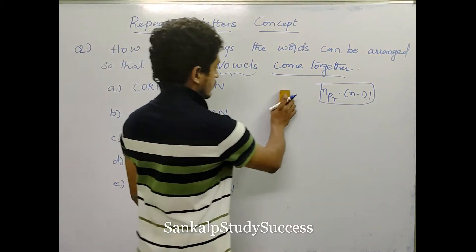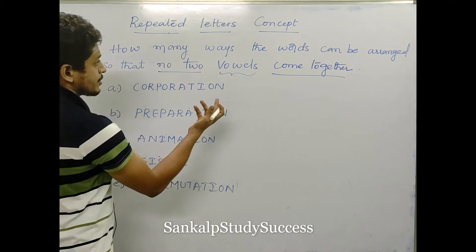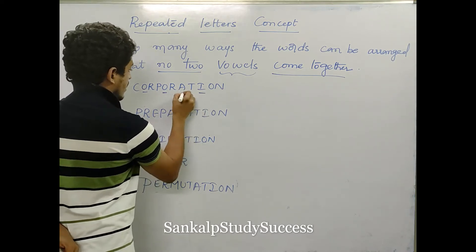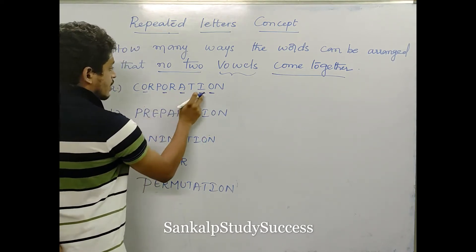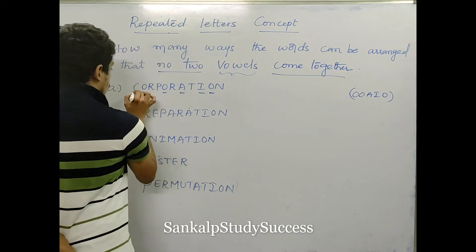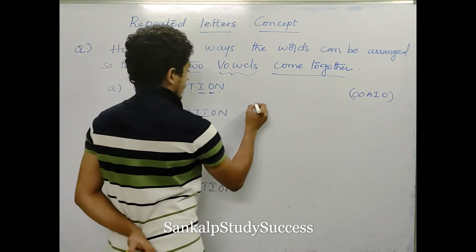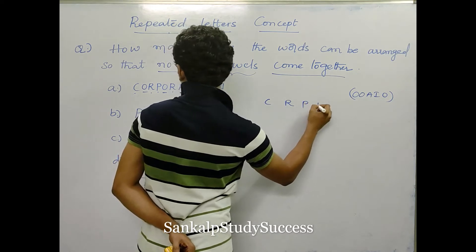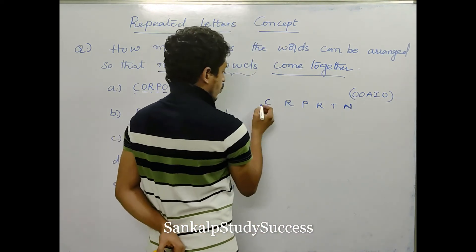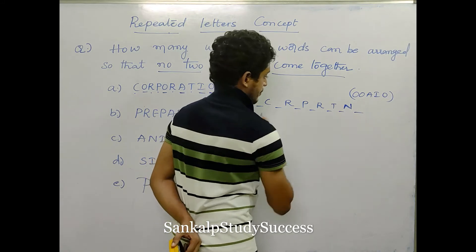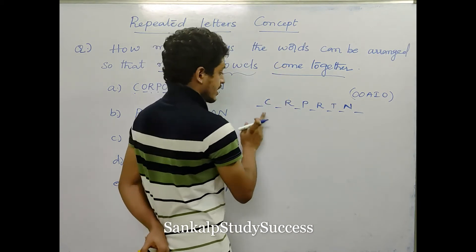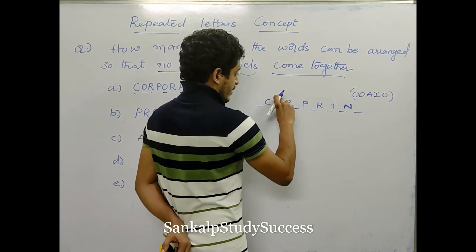Look at the first question: Corporation. We have vowels — O, O, A, I, O. So what are the consonants? One, two, three, four, five, six — that is C, R, P, R, T, N. So no two vowels come together. The vowels are O, O, A, I, O, arranged in the gaps between consonants.